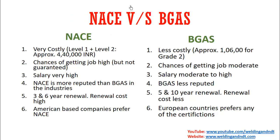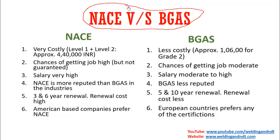Now let's compare NACE versus BGAS — which one is best or which one you should do. There is no specific answer, but we can do some comparison. First, based on fees: NACE is very costly. Normally, you need to do both NACE Level 1 and Level 2 for a good job, so you will have to pay something like 4,40,000 rupees combined. Whereas BGAS is much cheaper by comparison.